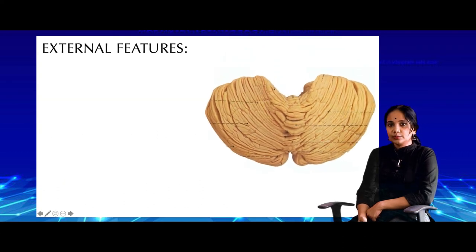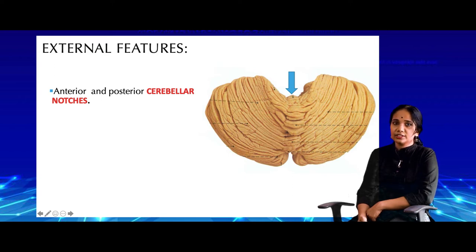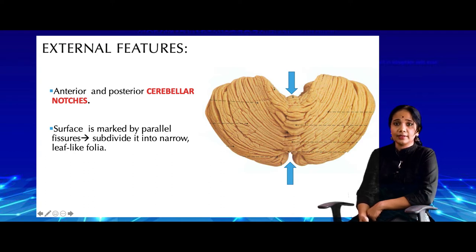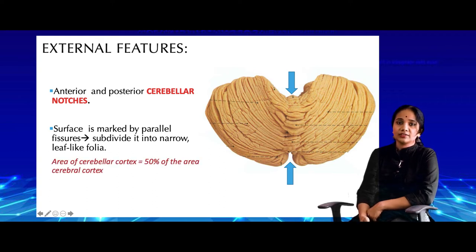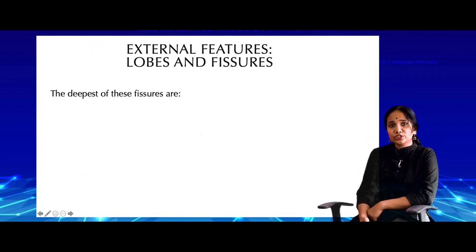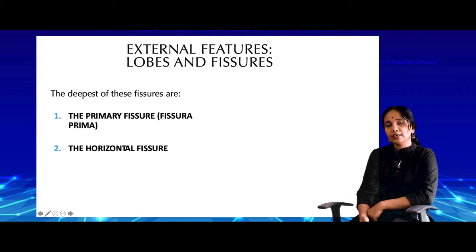Looking at the superior surface again, there are two specific notches called the cerebellar notches — one anterior and one posterior. The surface is also marked by many parallel fissures which subdivide the entire surface of the cerebellum into narrow leaf-like folia, which increase the surface area of the cerebellar cortex. The cerebellar cortex occupies as much as 50% of the area of the cerebral cortex. The three deepest fissures are the primary fissure (fissura prima), the horizontal fissure, and the posterolateral fissure.